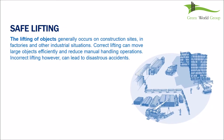In this session we are going to look at lifting of objects, which generally occurs on construction sites, in factories, and other industrial situations. Correct lifting can move large objects efficiently and reduce manual handling operations. Incorrect lifting can lead to disastrous accidents — every year it causes injuries, loss of work time, and property damage. People, machinery, loads, methods, and the work environment are all important factors for correct lifting. Provided that enough safety measures are fully implemented, lifting accidents can be reduced.